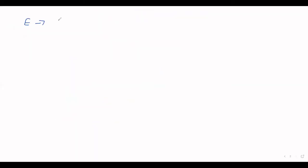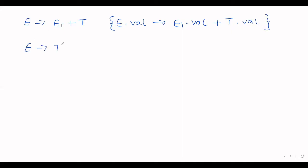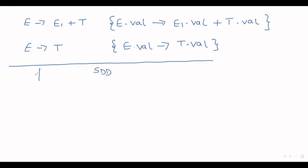Here is how you represent an SDD. Assume you have a production E → E1 + T — this is the context-free grammar. At the end of the production within curly braces you write the semantic rule: E.val = E1.val + T.val. For another production, E → T, you write E.val = T.val. This entire thing is called SDD. Here E, T, E1 are called symbols, and val is the attribute.